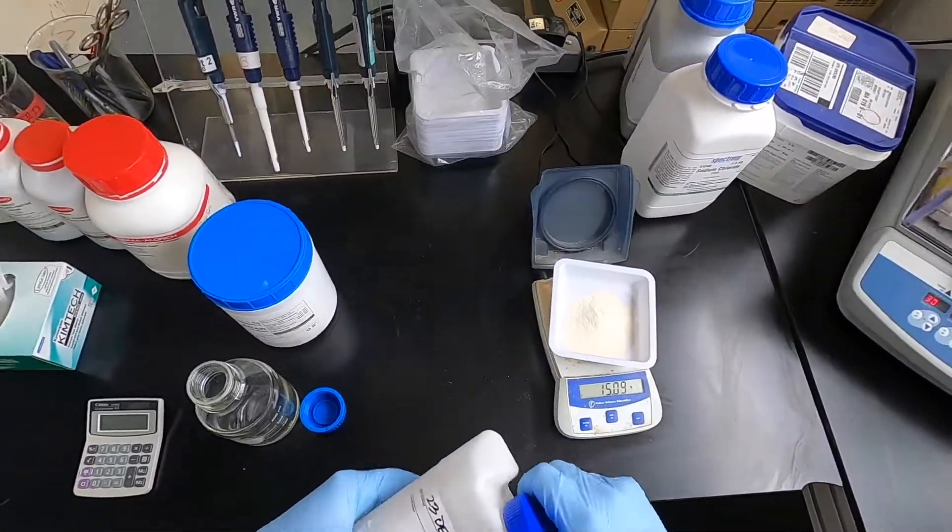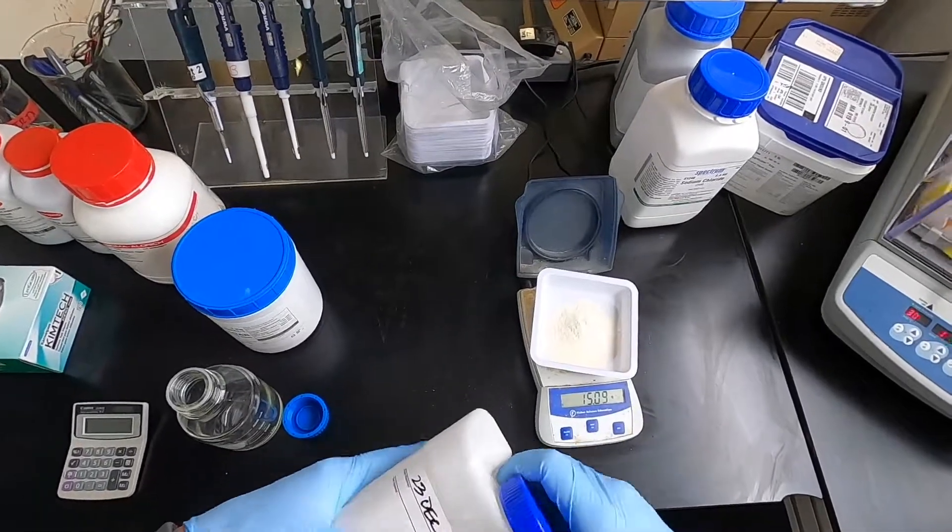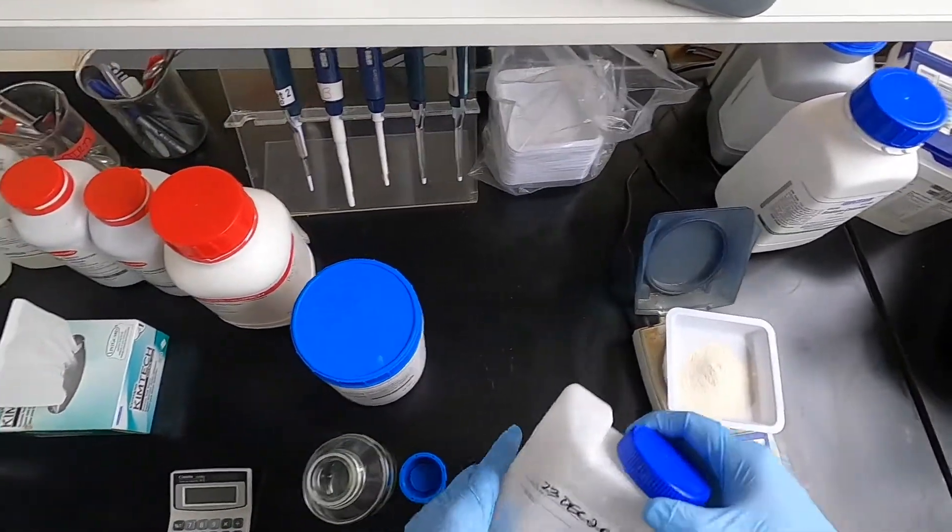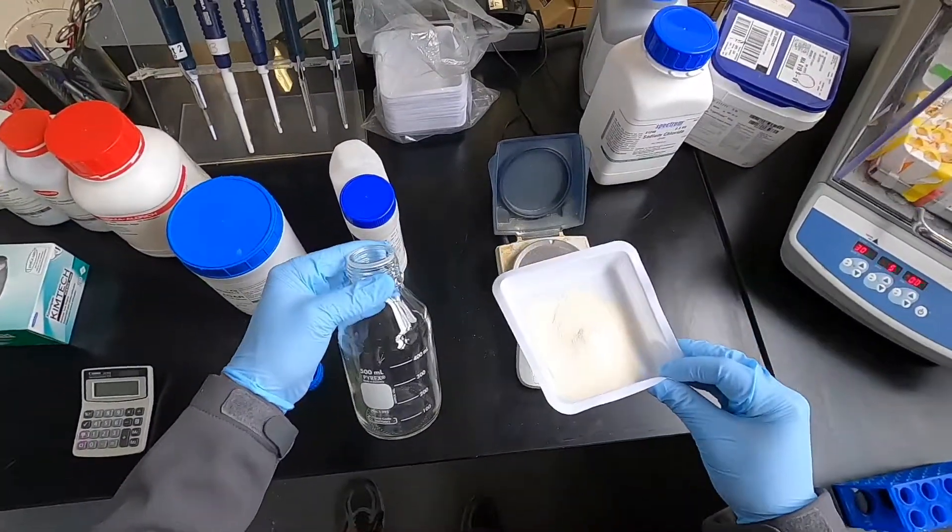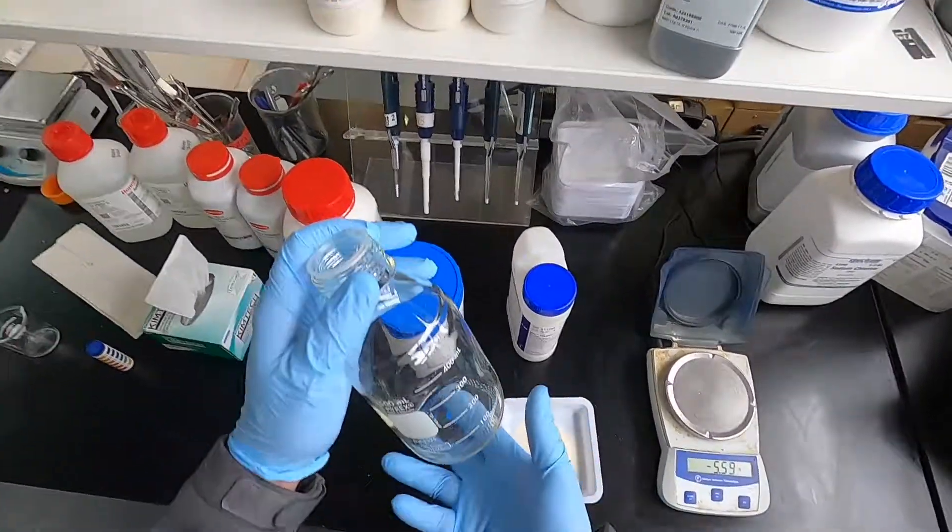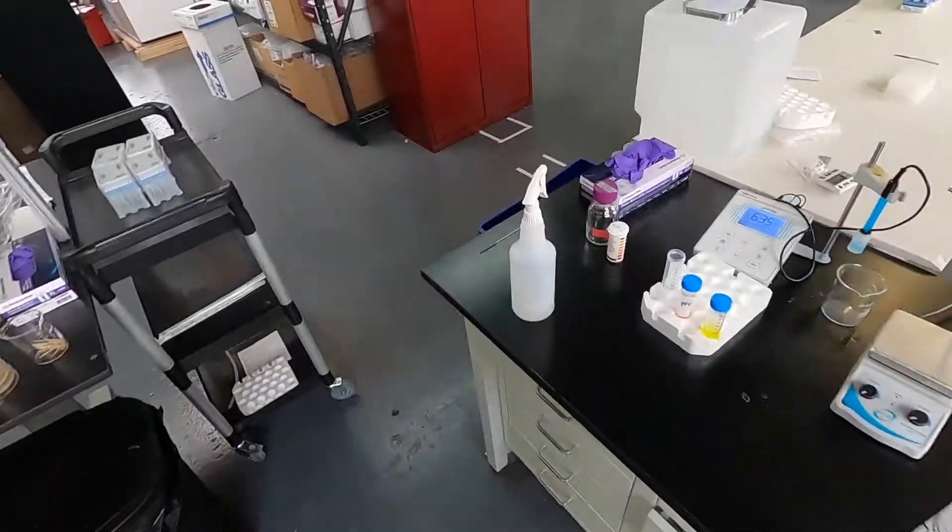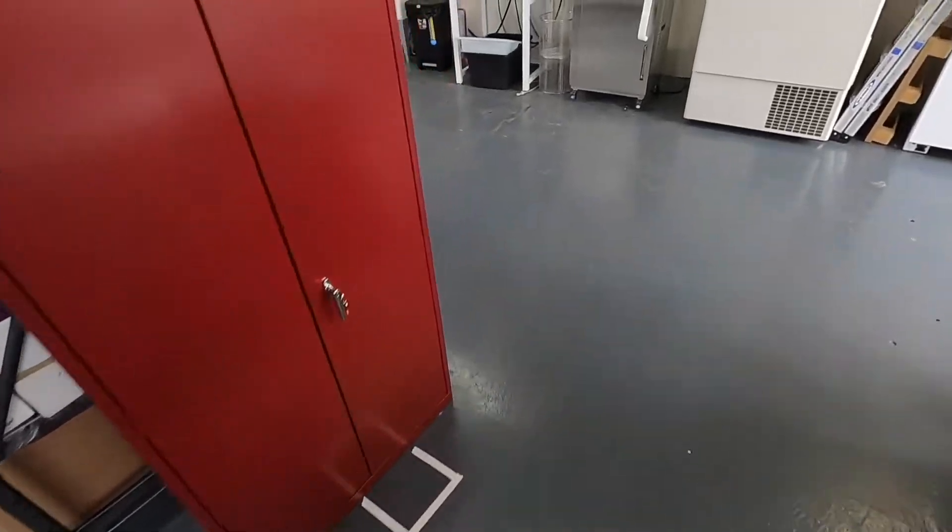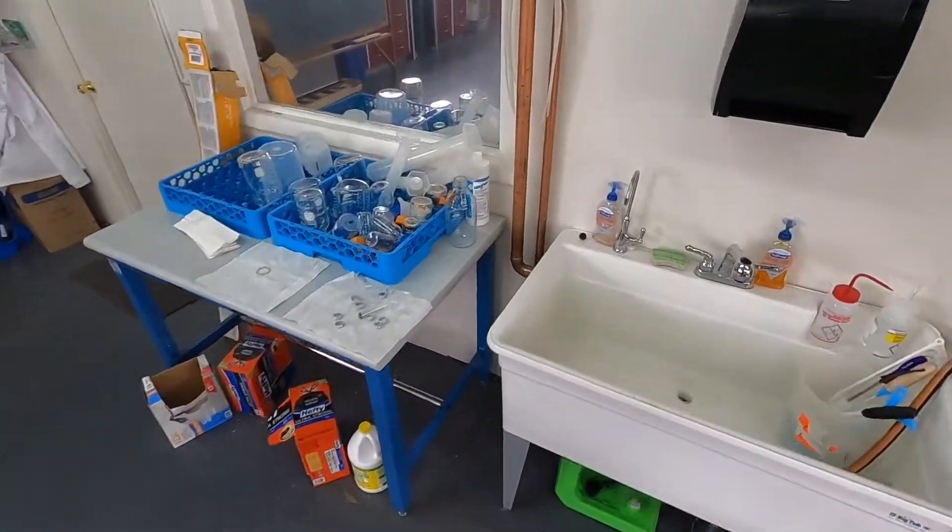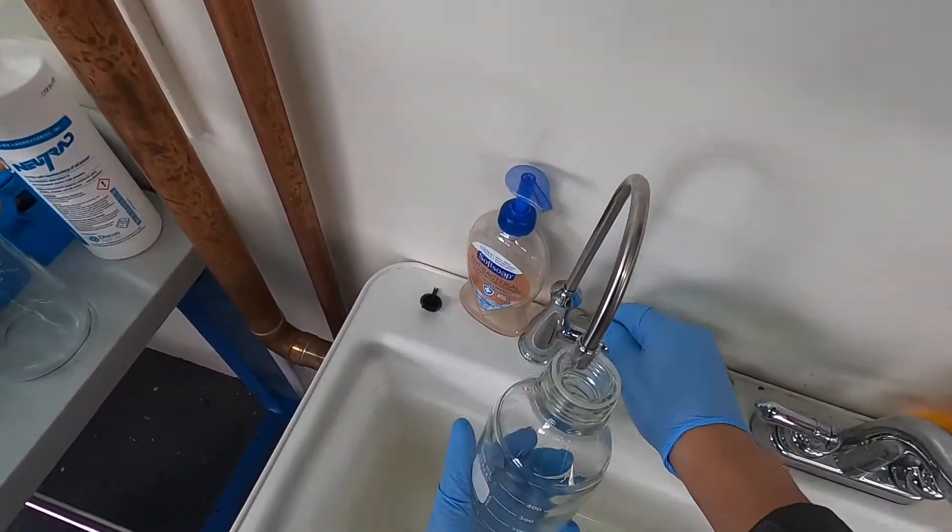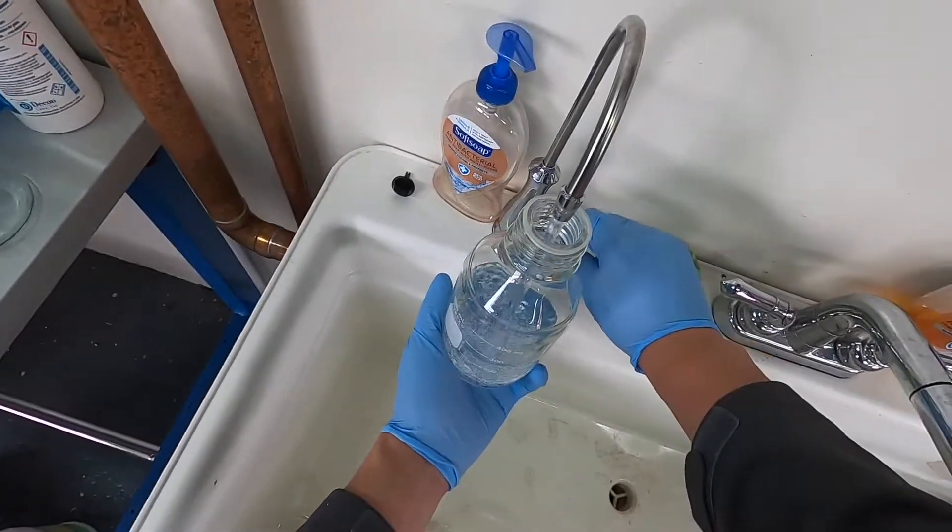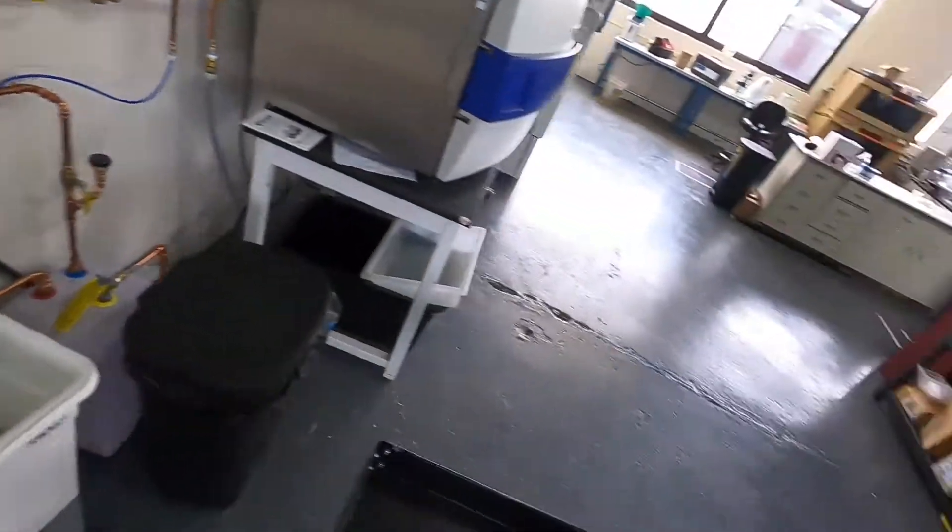We're going to measure out 15 grams per liter. So there's a lot of small things that happen in the lab that you slowly pick up over time. If I put this directly into the media bottle, what'll happen is when I put the water in, this will just stay dry and caked on the bottom, and then it's a pain to get off the bottom. And if you don't mix it before you put it in the autoclave, it will just burn the powder.